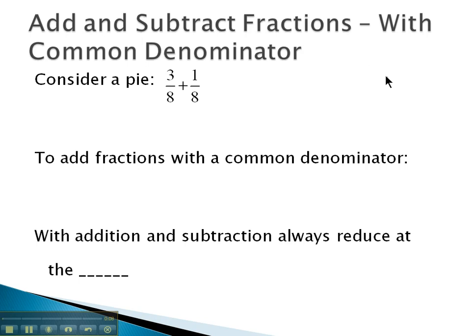To do this, we'll consider a pie. This first fraction, 3 eighths, tells me we're looking at 3 eighths of the pie. So let's split this pie into 8 pieces. 3 eighths will represent 3 of these 8 pieces. 1 eighth represents 1 of the 8 pieces.